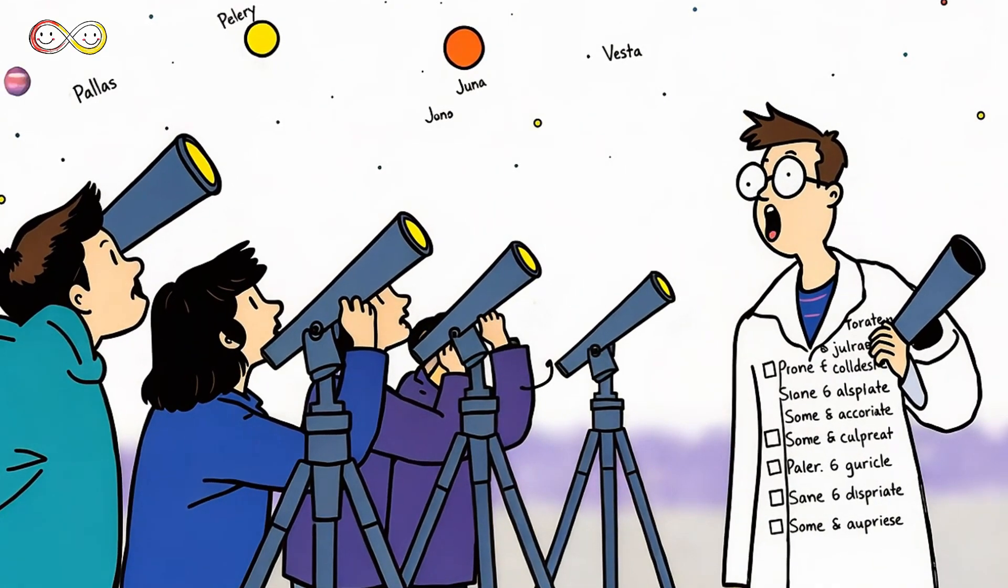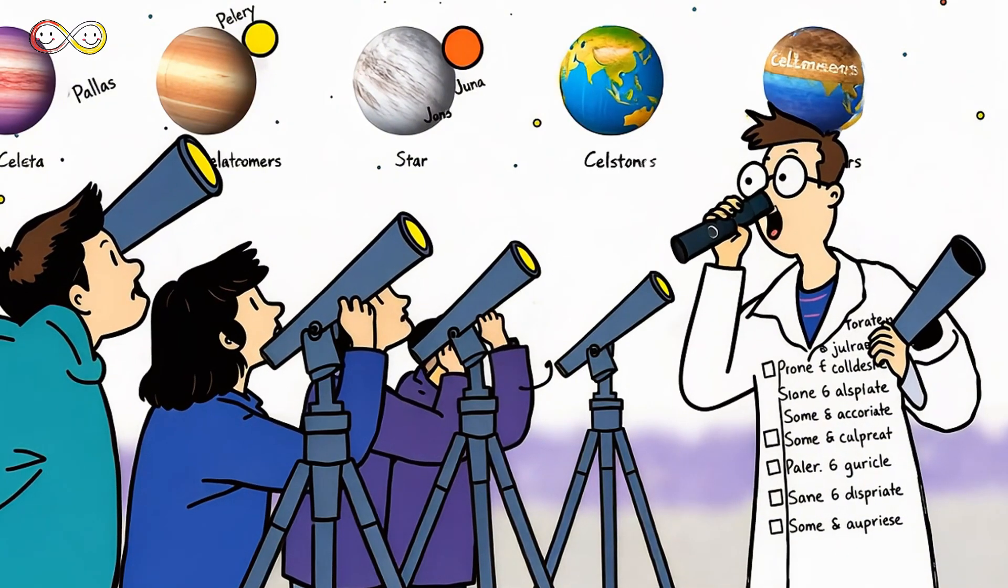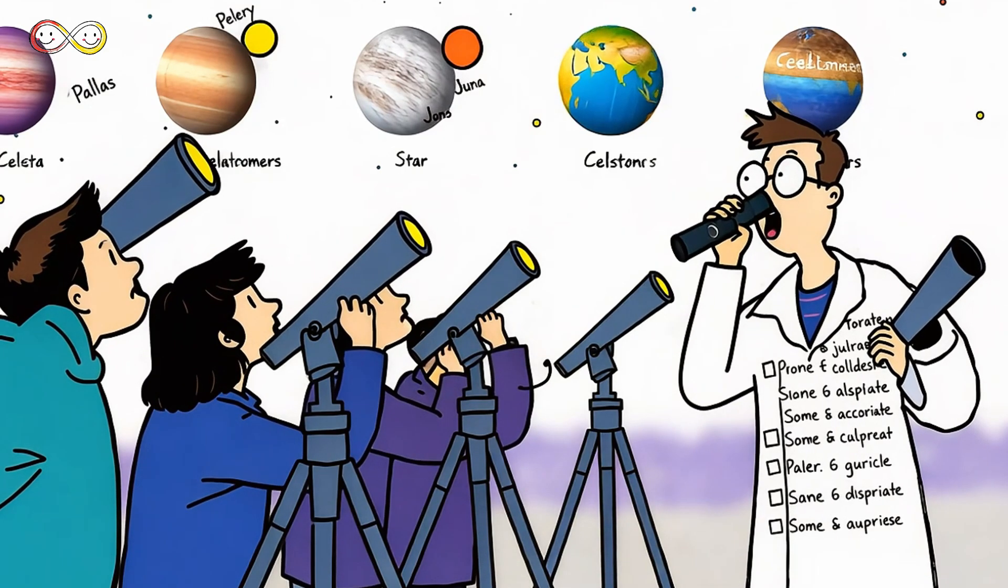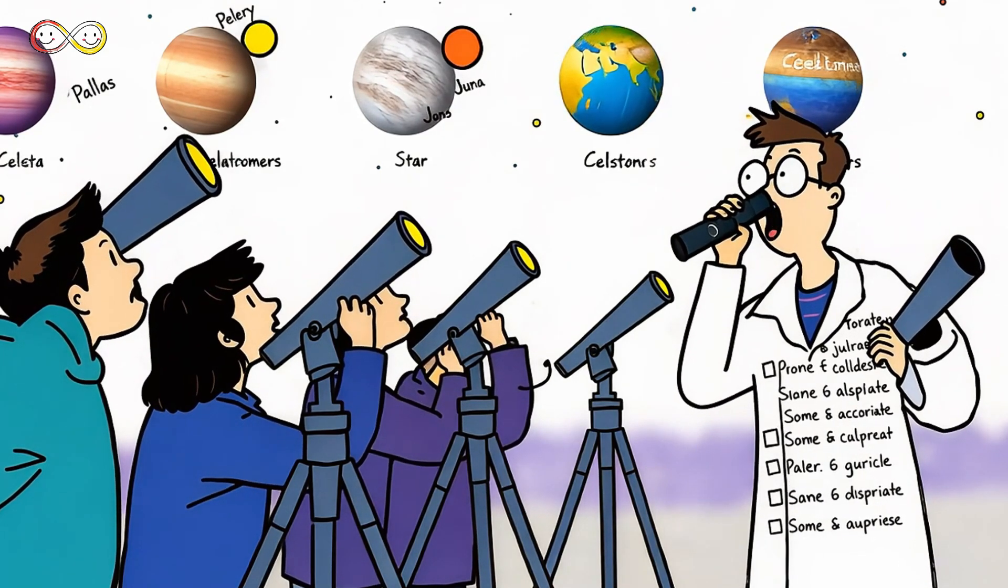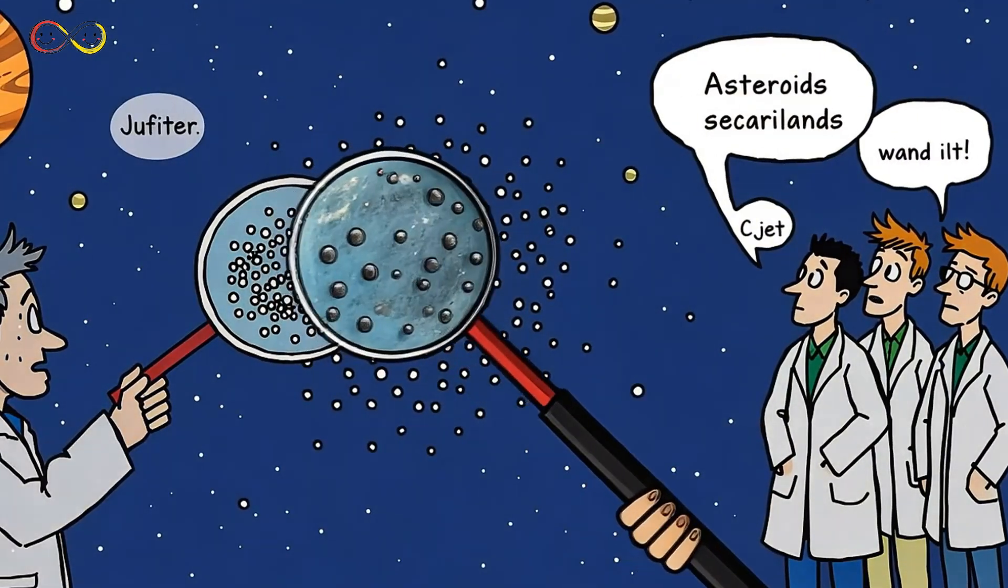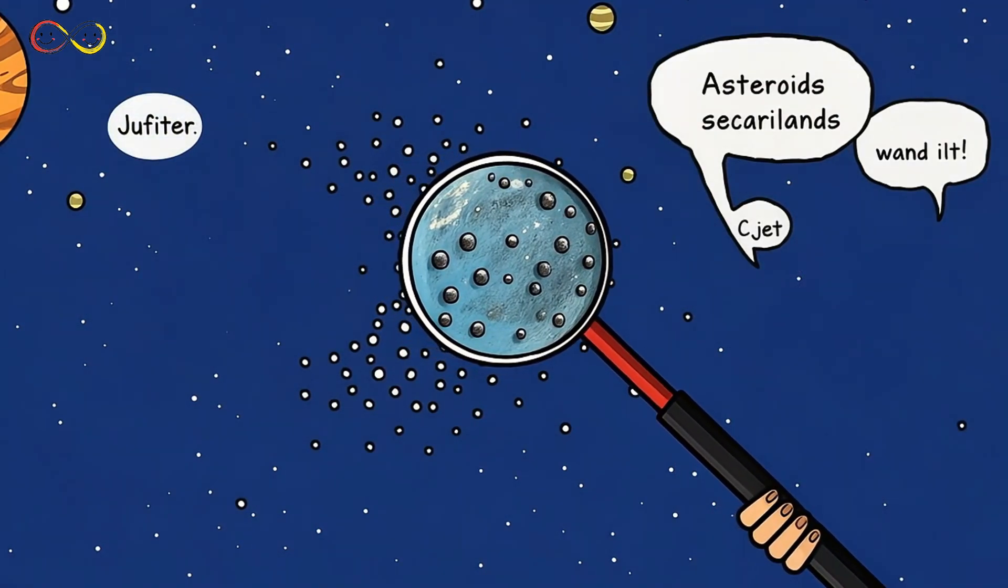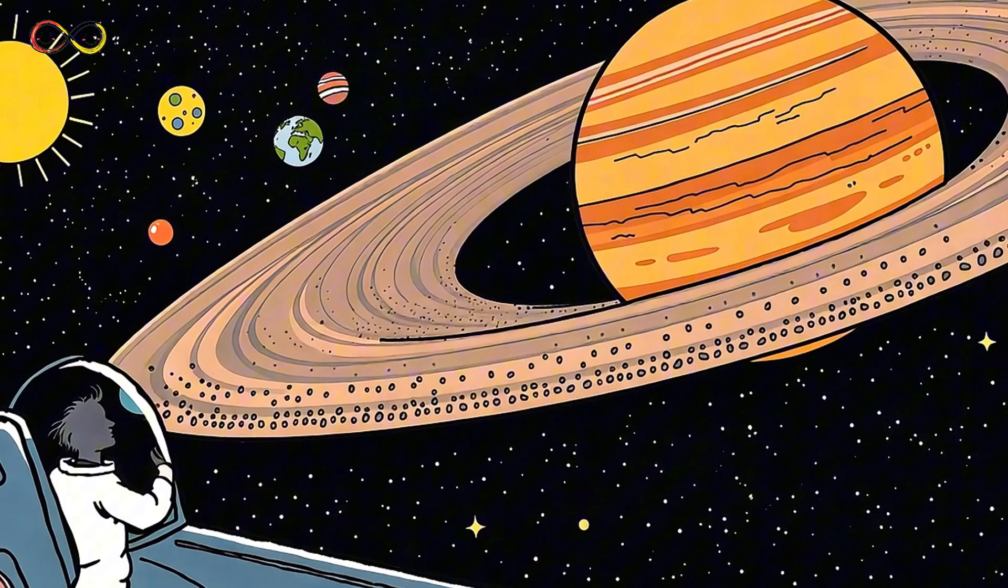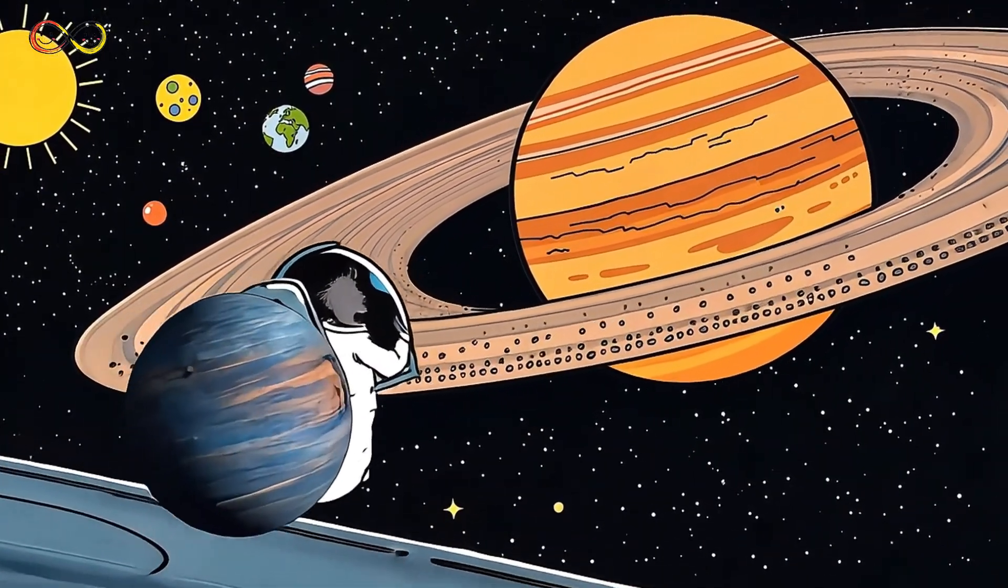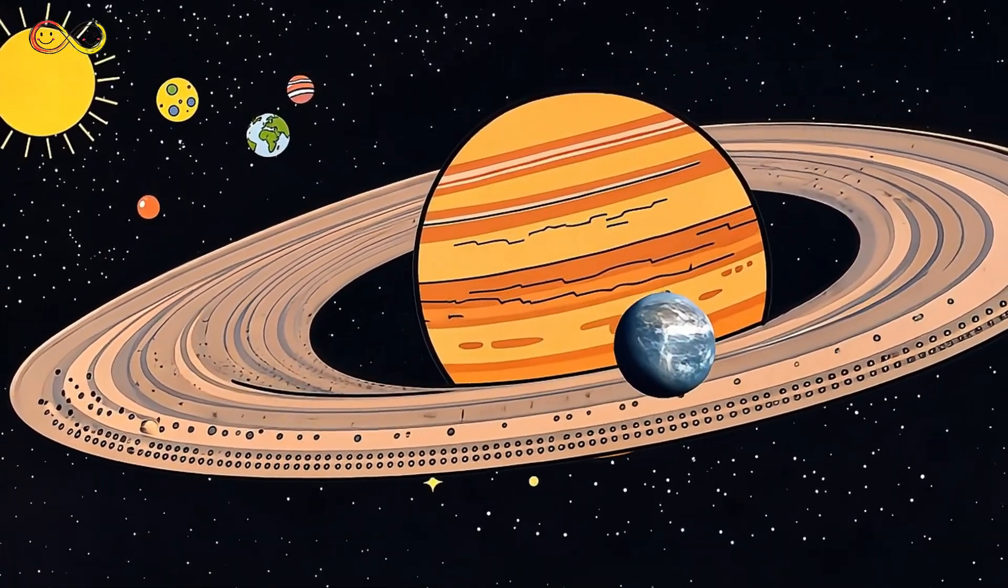After Ceres was found, astronomers didn't stop searching. They were determined to find more planets. One after another, more tiny celestial bodies appeared between Mars and Jupiter. Instead of a single planet, there was an entire swarm in the same region. As discoveries piled up, scientists connected the dots. These small celestial bodies formed a giant ring, stretching between Mars and Jupiter. This was the asteroid belt.